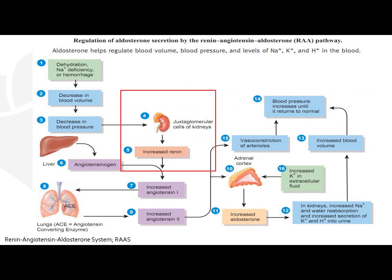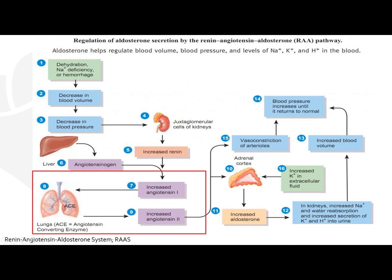External factors can include sodium, chloride, and potassium. What renin does is catalyze the conversion of angiotensinogen to angiotensin 1.